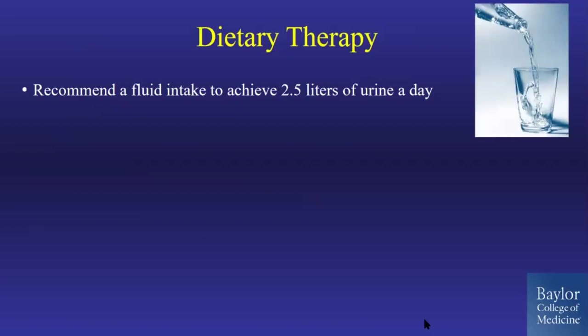Moving into dietary therapy: patients should drink enough to achieve 2.5 liters of urine per day. You can't tell patients exactly how much to drink because body size and activity levels differ, but the target is 2.5 liters. It might be 80 ounces or 120 ounces depending on the individual, but that's the marker they need to hit.